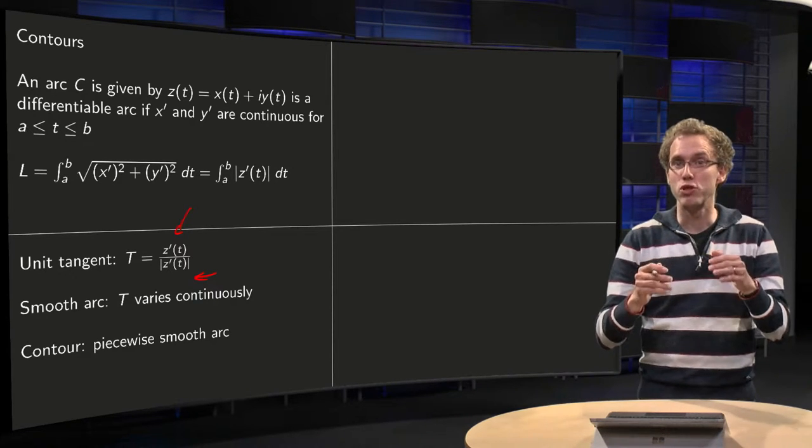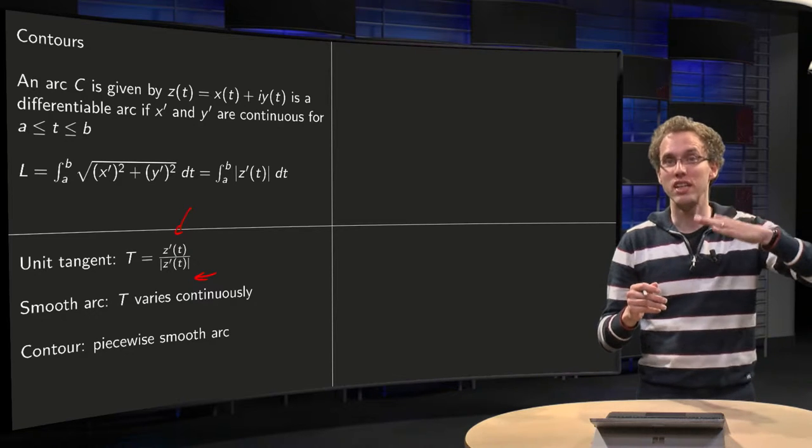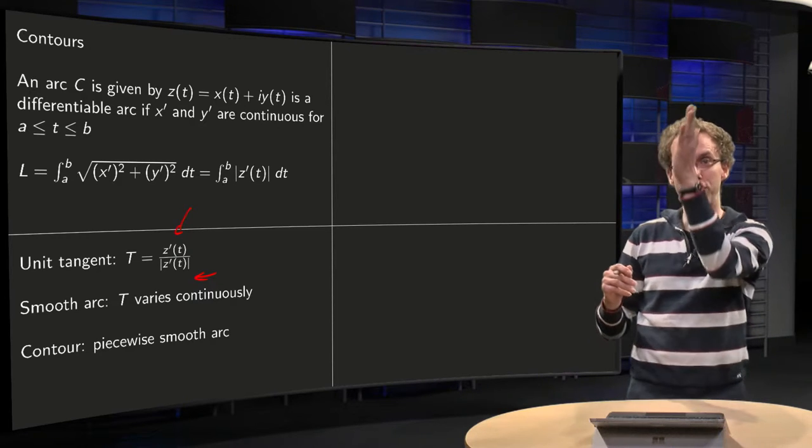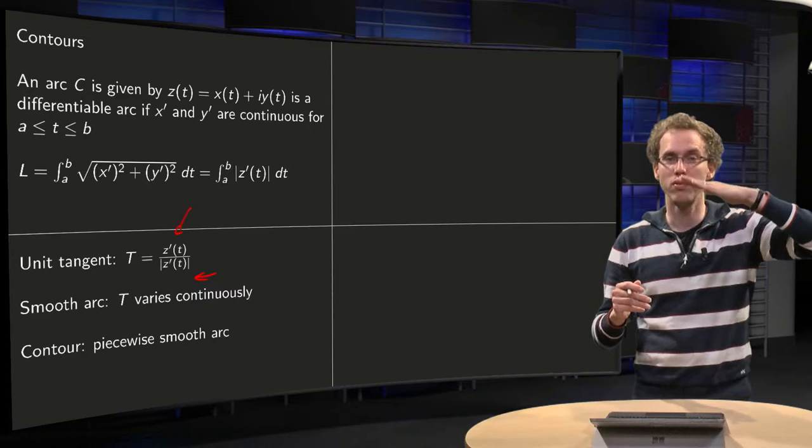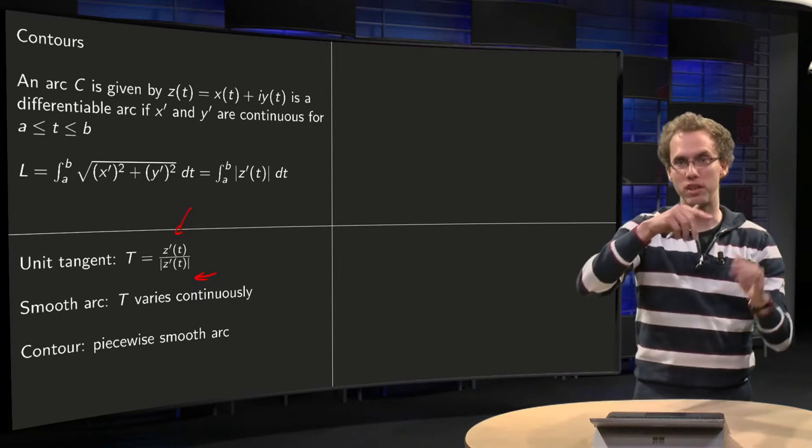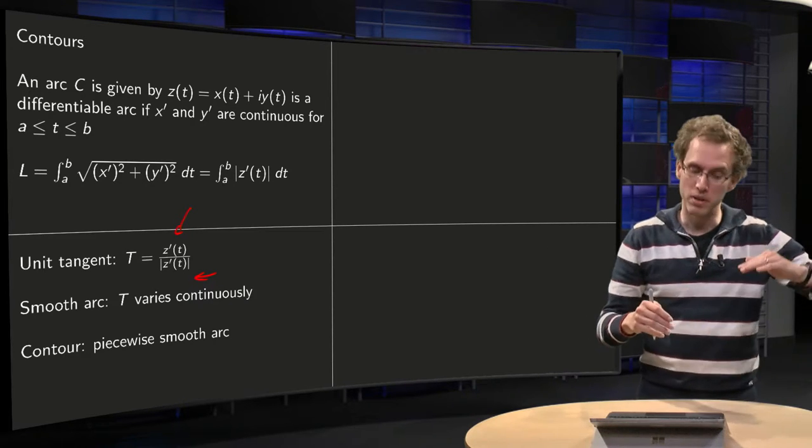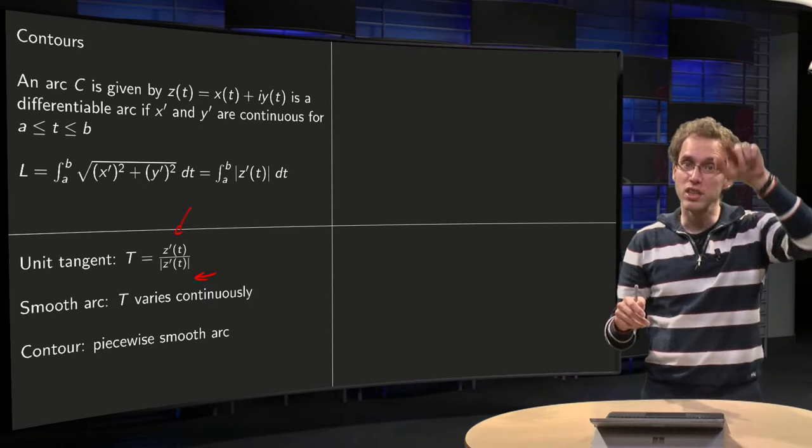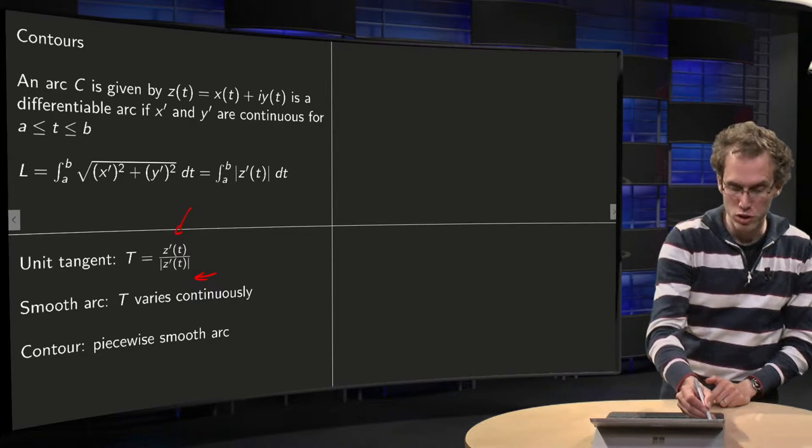And then when do we have a smooth arc? If this tangent doesn't jump, if the tangent varies continuously. So you don't want something like this and like that, because then you have a certain change of direction. But if your t varies continuously, then you have what is called a smooth arc.